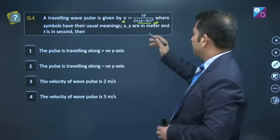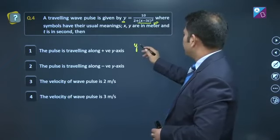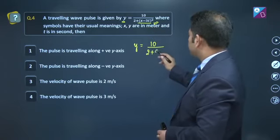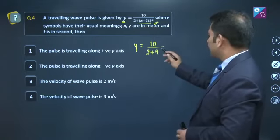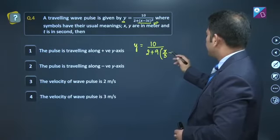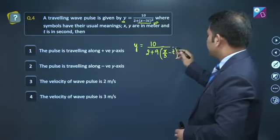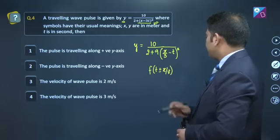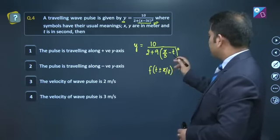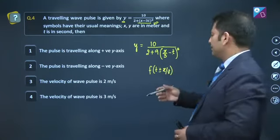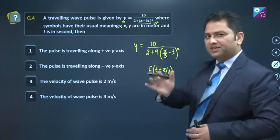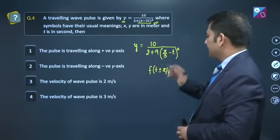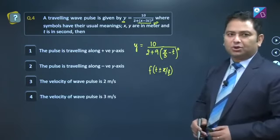For velocity, all you have to do is: y equals 10 divided by 2 plus - let me take 3 common from here, so that will be 9. Why am I doing this? You'll understand now. This becomes x by 3 minus t whole square. Actually, we want to compare this with this format: t plus minus x by v. So in this format, the coefficient of t is 1, right? Don't worry about the minus, you can always think minus is for the direction part. And what x's denominator is, that is the velocity. So x's denominator here is 3. That means the velocity is 3 meter per second. So option number 4.